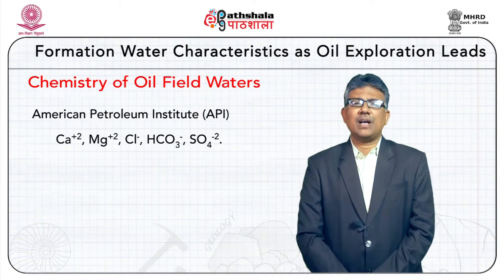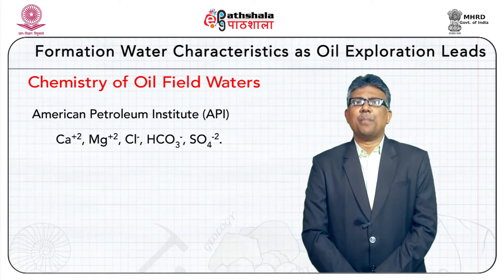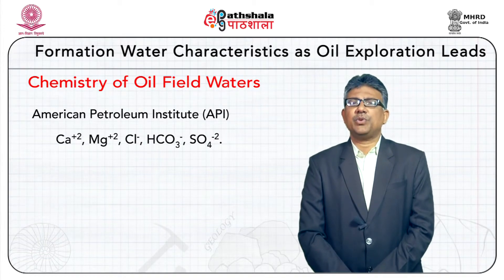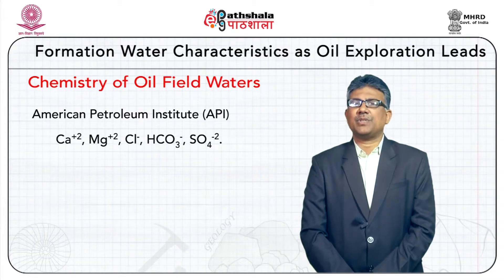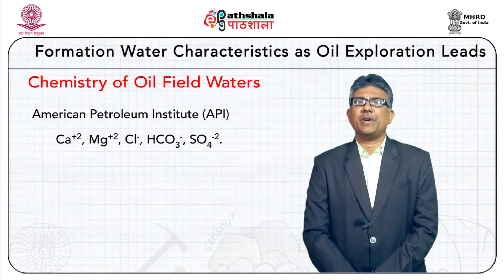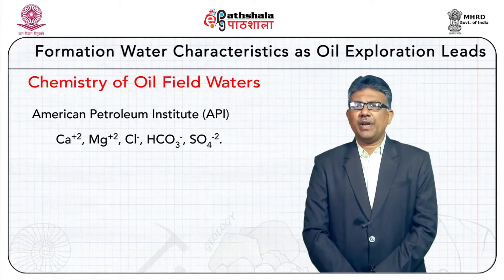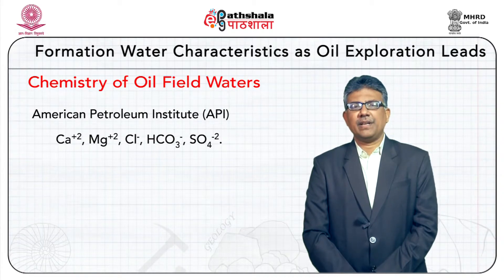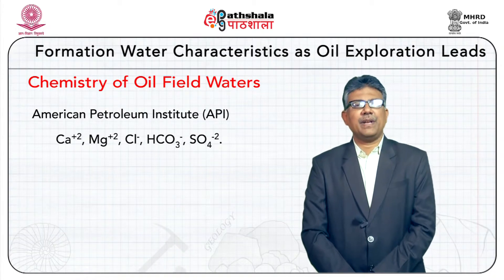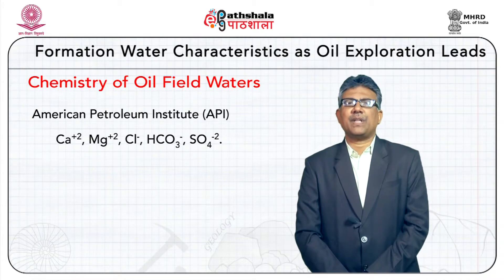From basic chemistry, each element or radical has its own combining weight. For example, to form NaCl, 22.997 grams of sodium reacts with 35.457 grams of chlorine — no more, no less. The sum of equivalent weights of cations must equal the sum of equivalent weights of anions. The equivalent weight of an ion is obtained by multiplying the actual weight of the ion expressed in milligrams per liter by its valency, then dividing by the atomic or molecular weight of the ion.